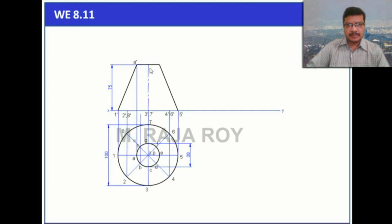And this point is A dash. Here you will get B dash and H dash. This is C dash and G dash. Here, D dash and F dash. Then E dash.